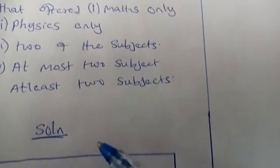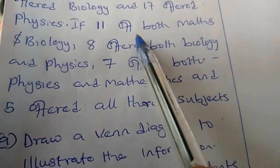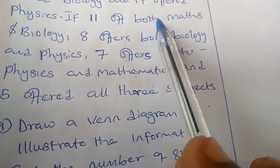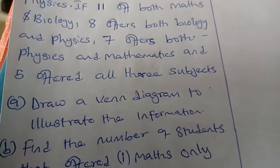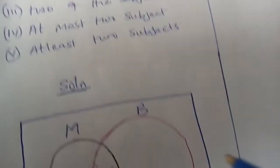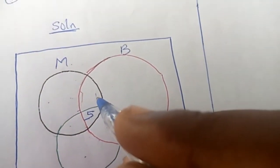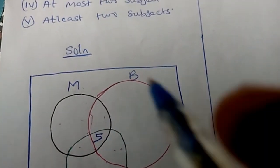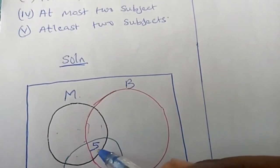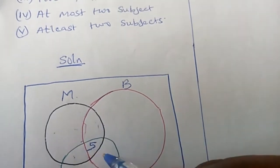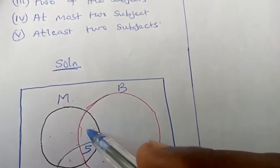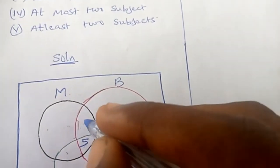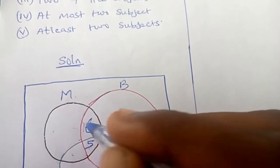For mathematics and biology: they say 11 offered both mathematics and biology. This is why you have to put the three-way intersection value first — because when you are filling in the two-set intersections, you need to remove that 5 from them. Since math and biology is 11, you remove 5 from 11, giving you 6. So the math-and-biology only region is 6.